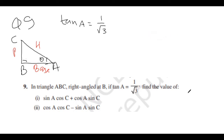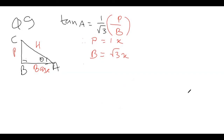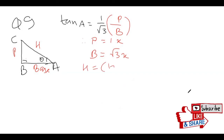Coming to question 10: tan A = 1/√3, so perpendicular is 1x and base is √3·x. We need to find the hypotenuse. Hypotenuse² = perpendicular² + base² = (1x)² + (√3·x)² = x² + 3x² = 4x², so hypotenuse = 2x.